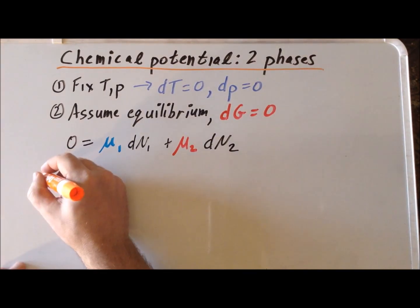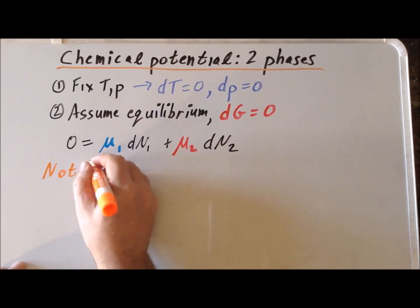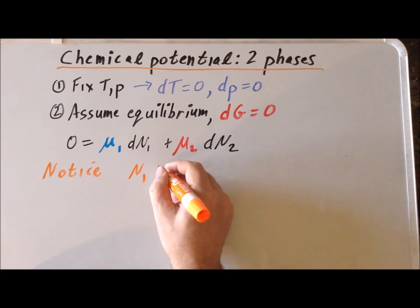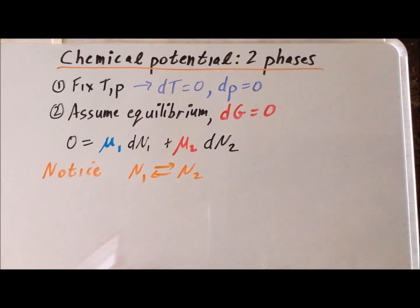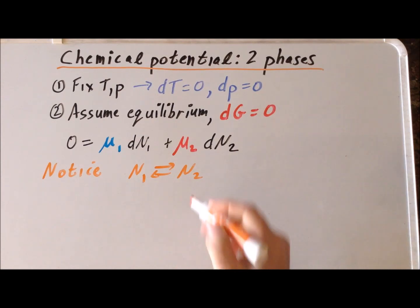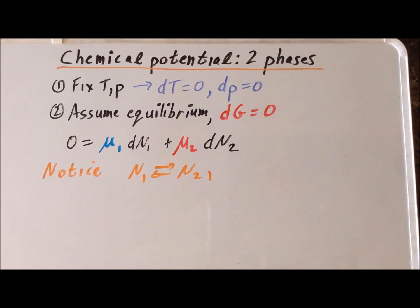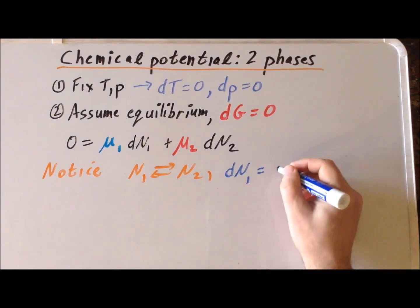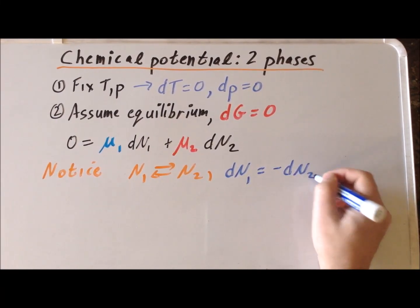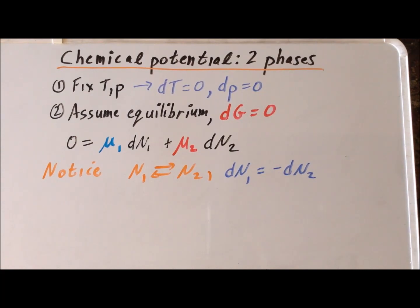Now we want to notice something about our two-phase system: molecule one and molecule two are in equilibrium with each other. With this particular stoichiometry, as one molecule of liquid turns into gas, the number of molecules n1 decreases and the number of molecules n2 increases by one. So as an important consequence, dn1 has exactly the opposite sign of dn2 — as n1 increases, n2 decreases, and as n1 decreases, n2 increases.